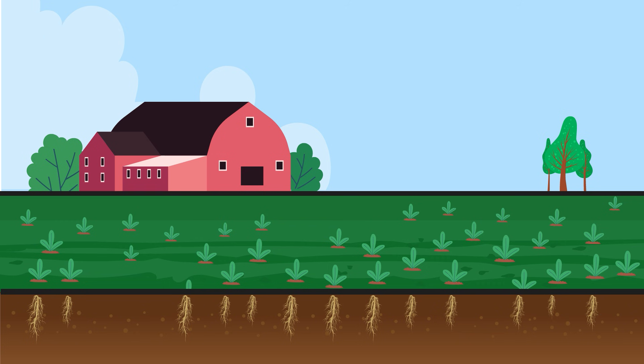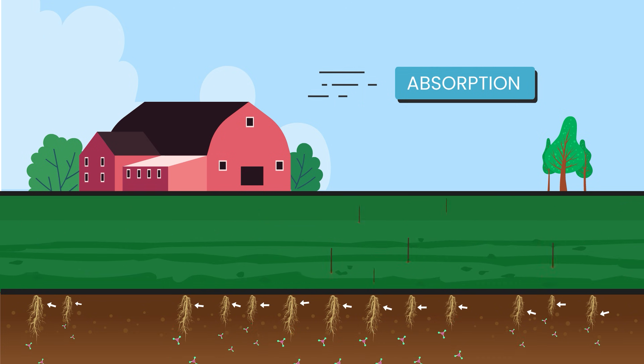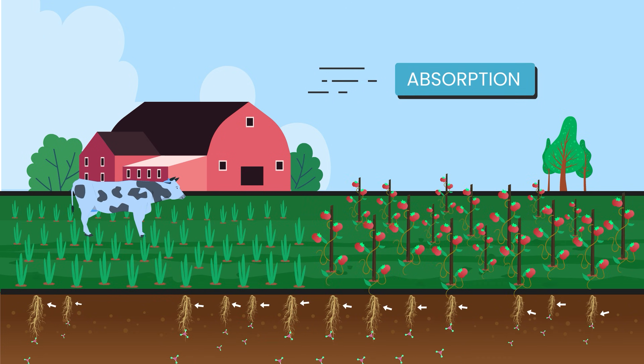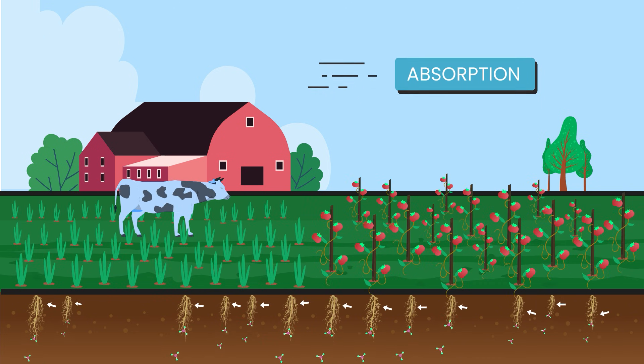Second stage, absorption. Plants absorb nitrates from the soil through their roots. They use this nitrogen to grow and produce food. When animals eat these plants, they get the nitrogen they need as well.